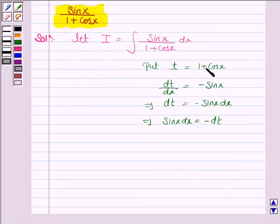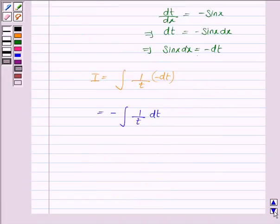And 1 plus cos x is t. So substituting all these values in this integral, the integral becomes 1 upon t minus dt, which is rather equal to minus integral 1 upon t dt.